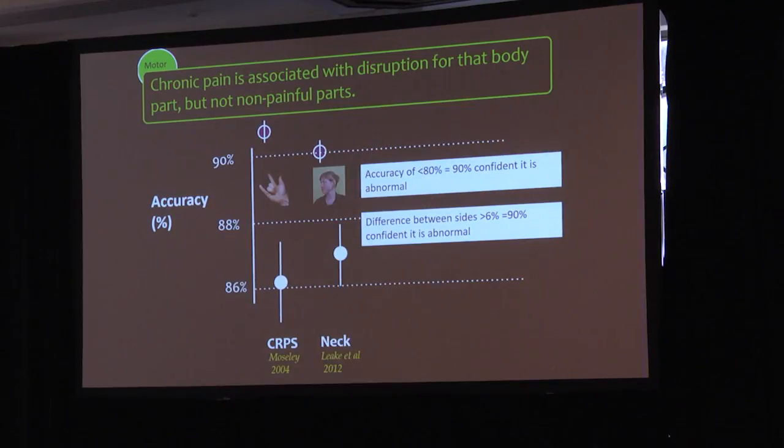Not many people see CRPS, so let's go to neck pain. If on the neck pain task their accuracy is less than 80%, that's our trigger for saying that's abnormal.